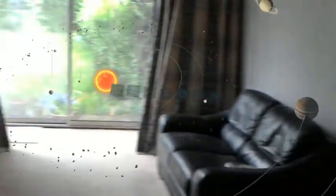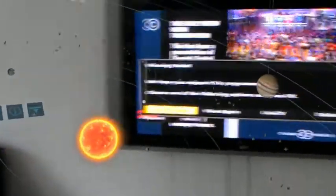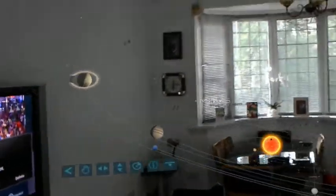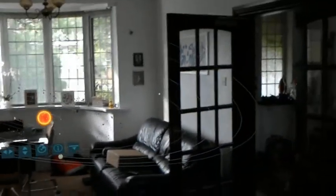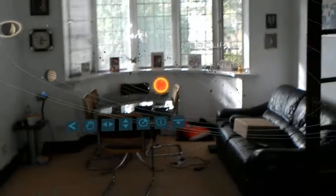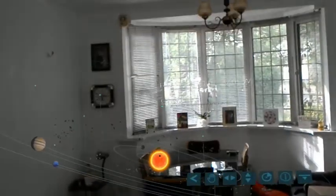Our solar system. This familiar representation of our solar system simplifies sizes and distances so that the sun and all of the planets can be easily seen at once. Click the view button above the sun to toggle between this and a more realistic view.